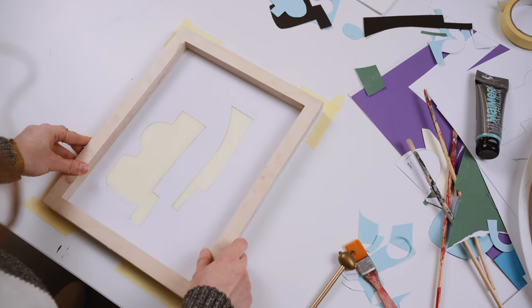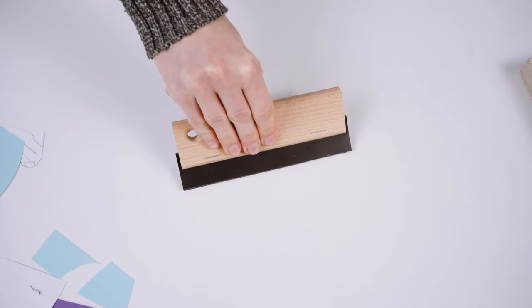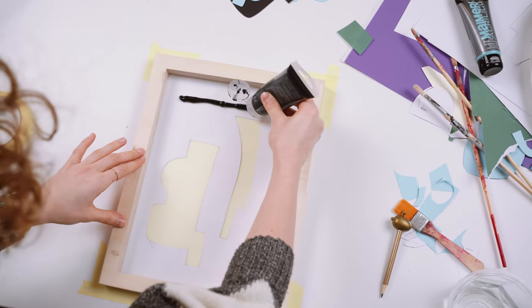Przyda nam się jeszcze rakla. To uchwyt z gumą do przyciskania farby przez oczka siatki.